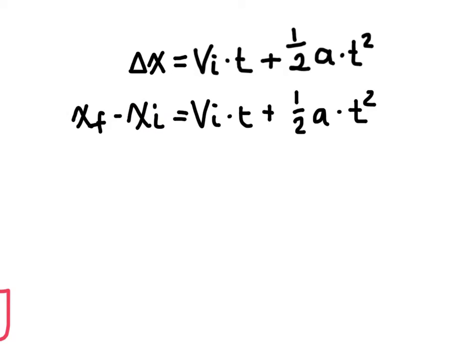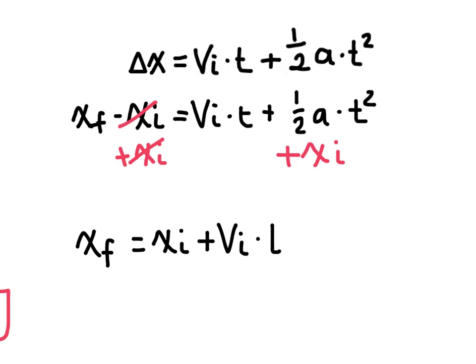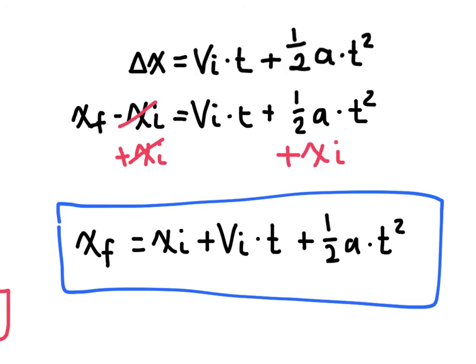And even if I rearrange this a little bit, if I wanted to move this initial position over here to the other side, I could add that to both sides of the equation here. That's going to eliminate it on this side and I can end up with an equation that looks like this. So I move that x initial over and so I have an equation that can solve for the final position of an object. So there's kind of a few things we can do with these equations to make them a little more useful as well.